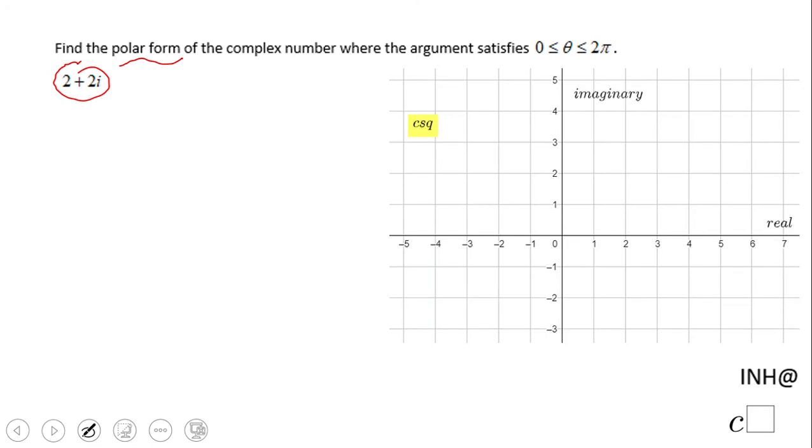First of all, let's see where that point is in this complex plane. 2 plus 2i means I'm gonna go from the origin 2 to the right and 2 up because we have 2 and the imaginary part is 2i. So this is the point 2 plus 2i.